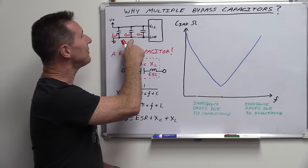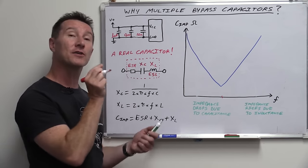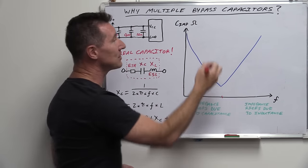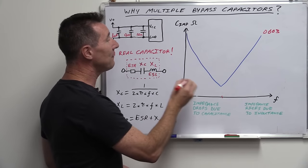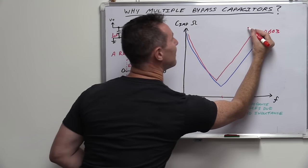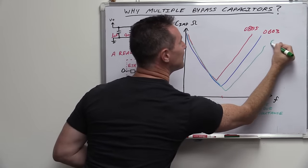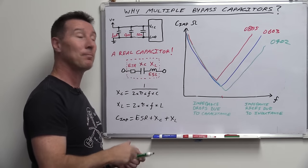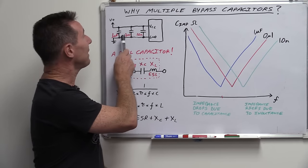Not only do you have different values, but you have different packages as well, because the package actually makes a difference. As a general rule of thumb, the smaller the package, the lower inductance it's going to have internally. So a 0603 SMD package will have lower inductance than an 0805, which in turn has lower inductance than a larger package. Different packages actually give different impedance characteristics. It's actually better for higher frequency use to use the smaller packages.